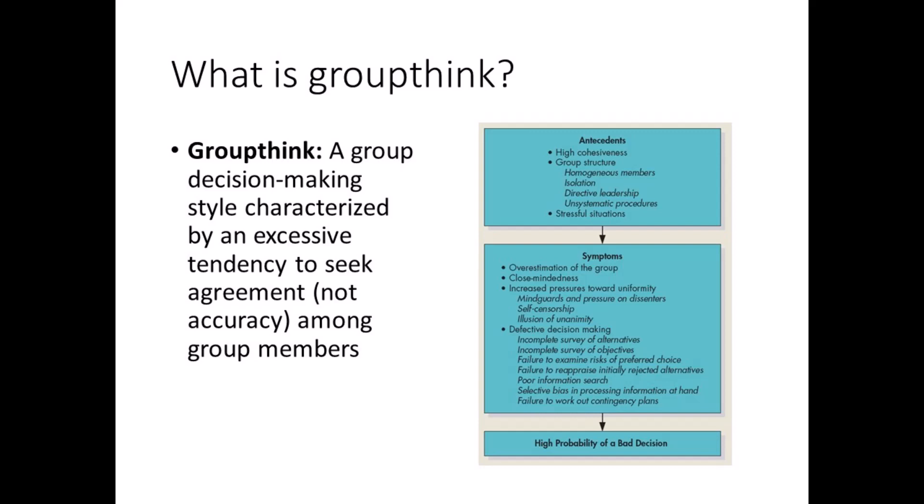At the top of the figure on this slide, you can see the antecedents of groupthink — the variables that lead a group to adopt this style: when groups are highly cohesive, when group members are similar to one another, when the group is isolated from other groups, when it lacks decision-making procedures, and when the group is under stress from time pressures. In the bottom half of the figure, you can also see the symptoms associated with groupthink. People in these groups tend to be close-minded, pressure others to conform, and make poor decisions.